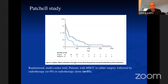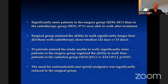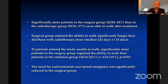Regarding surgery versus radiotherapy for high-grade compression, the Patchell study is the most-quoted paper — a randomized multicenter trial where patients with mononumeric spinal cord compression were randomized to surgery followed by radiotherapy versus radiotherapy alone. It showed that significantly more patients in the surgery group were able to walk after treatment, with much better walking distance. Dependency on corticosteroids and opioid analgesics was also much less in the surgery group, providing good evidence to support surgery over radiotherapy alone.